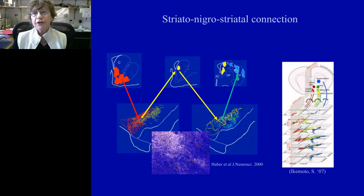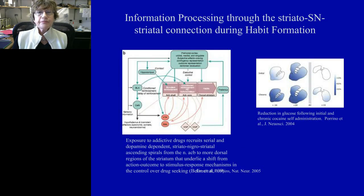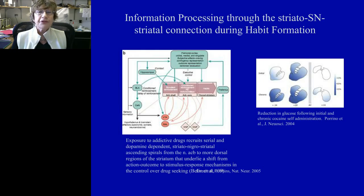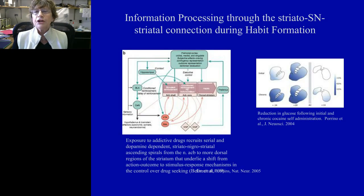When we put these together, we find that the limbic region projects to cells that terminate in the cognitive areas, which then project to a region of the nigra that in turn projects to the motor striatum. So we have a spiral movement from limbic to cognitive to motor parts of the striatum. Barry Everett and colleagues demonstrated this spiral underlies the shift from an action-outcome to stimulus-response mechanisms in the control over drug seeking. A study by Linda Perino et al. shows how after chronic cocaine use, glucose utilization moves from the ventral to the dorsal striatum, presumably through this mechanism.